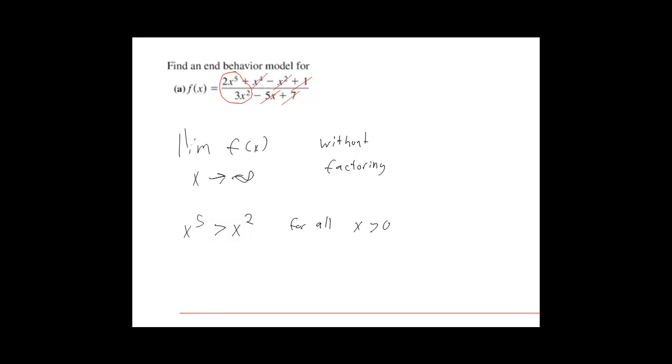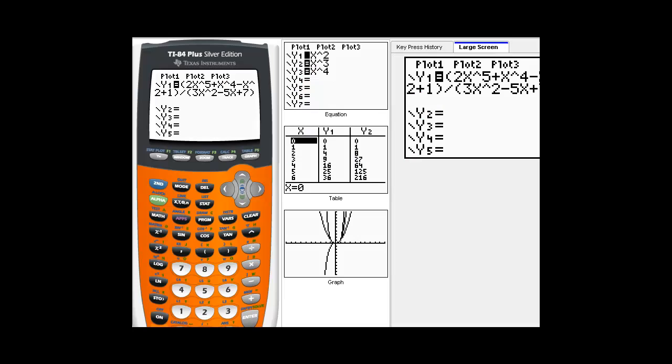So you can kind of cross out all these other ones. Just look at your leading terms, 2x to the fifth over 3x squared. This function for really large x behaves just like 2x to the fifth over 3x squared, which we simplify to 2x cubed over 3. So for really big values of x, this limit is going to be the same limit as this 2x cubed over 3 function, which is 2 thirds x cubed.